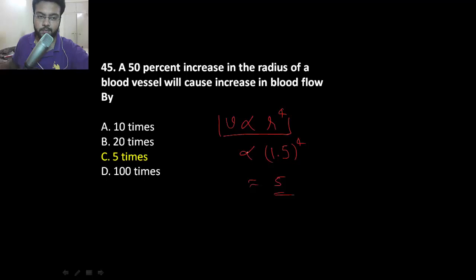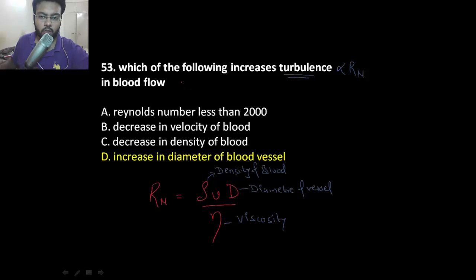Which of the following increases turbulence in blood flow? Here is the formula for the Reynolds number: rho vd upon eta. Rho is the density of the blood, v is the velocity, d is the diameter of vessel, and eta is the viscosity. If the Reynolds number increases, the turbulence in the blood vessel will also increase. So Reynolds number is directly proportional to the turbulence.